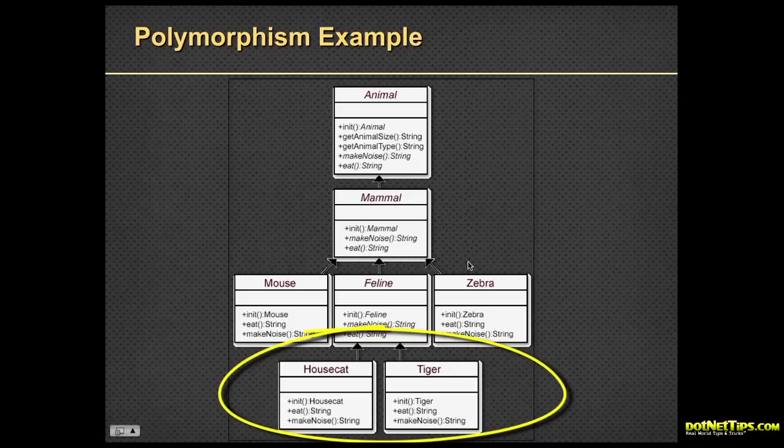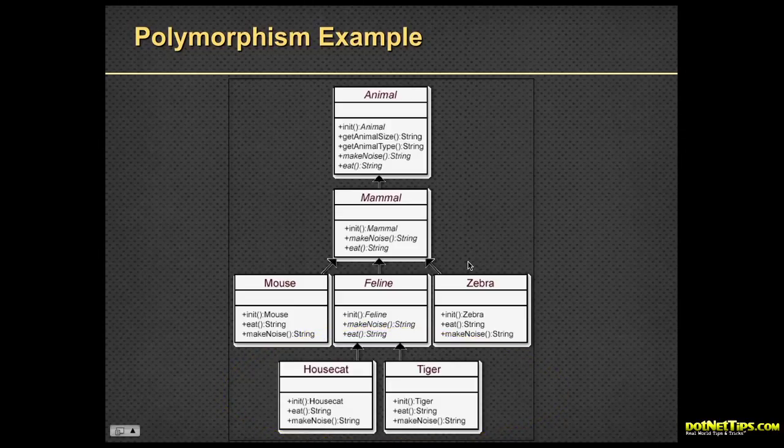When you have objects that go together like this, especially when you're creating complex types in your application, like a student type, for example, one of the types I'm designing at work, because in our database tables, every database table implements customer information differently. In one place, it'll be phone number, address one, address two, zip code, and country. And another place, it'll be address one, address two, postal code, and country. And another place will be something different.